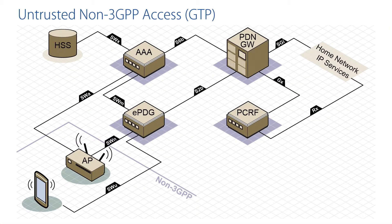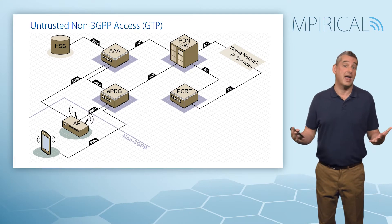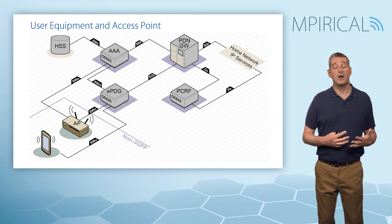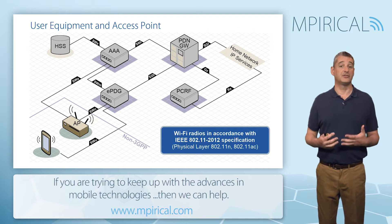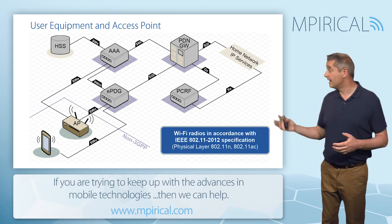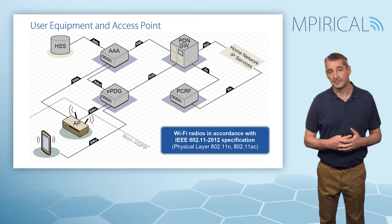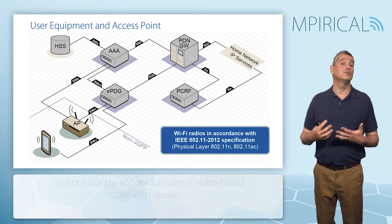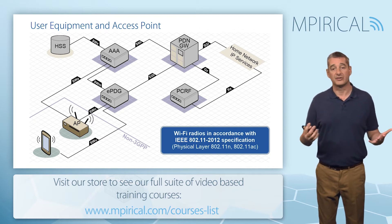Looking at our untrusted non-3GPP access network, let's focus on the key network elements and their associated functions. To begin with, we have our mobile phone and the access point. This is our Wi-Fi connection, with both devices supporting a Wi-Fi radio in accordance with the IEEE 802.11 specifications. The mobile phone needs not only a Wi-Fi radio but also the standard cellular radios supporting LTE, UMTS, and GSM.